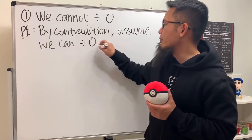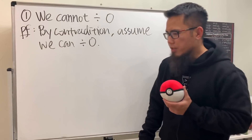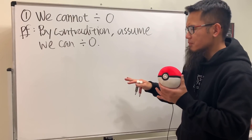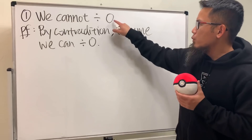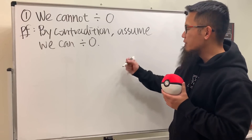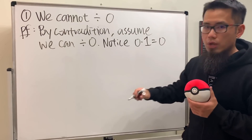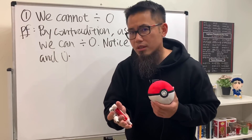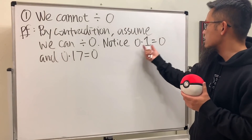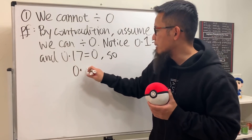For a contradiction proof, once we have the assumption — the opposite of the statement — we try to end up with something crazy. We know that zero times any number equals zero. So zero times 1 equals zero, and zero times 17 equals zero as well.